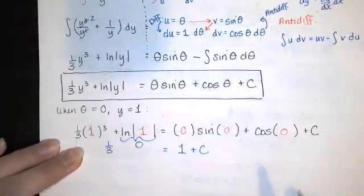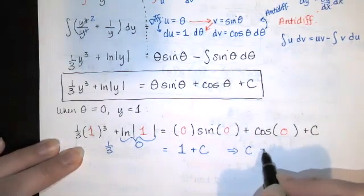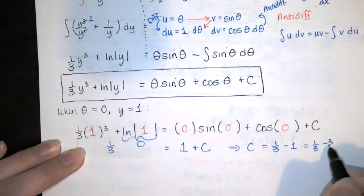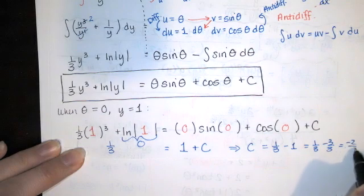So one third equals one plus c. That means c equals one third minus one, or one third minus three thirds, which is negative two thirds.